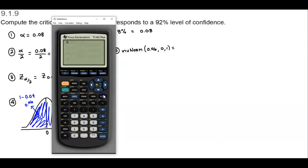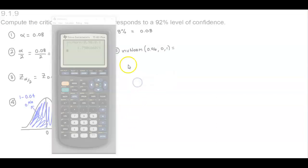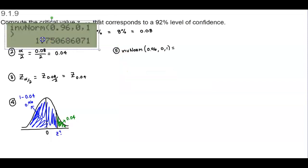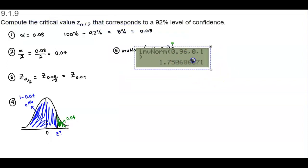We have second distribution, we're going to go to INV norm. We're going to put in the area to the left of 0.96. We know that the mean is 0 and the standard deviation is 1. Let's copy that down here. You can see that we get 1.75.